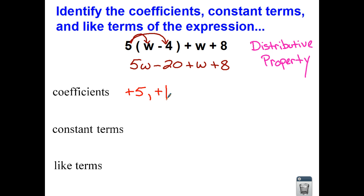My constant terms are negative 20 and 8. Now I'm going to group these like terms. So I have my 5w and my 1w, negative 20 and 8.